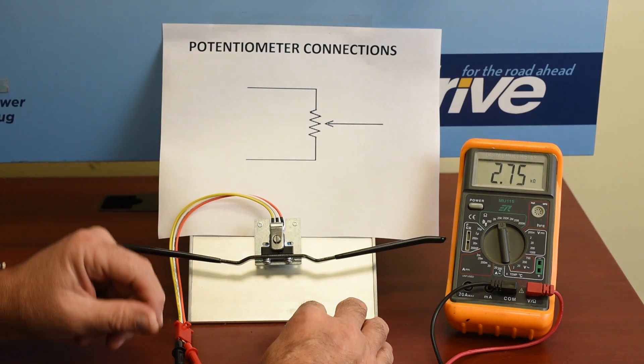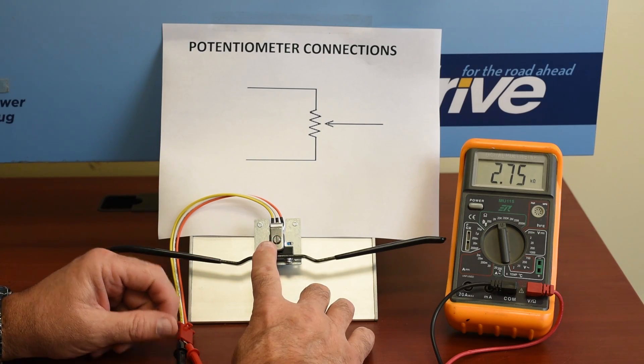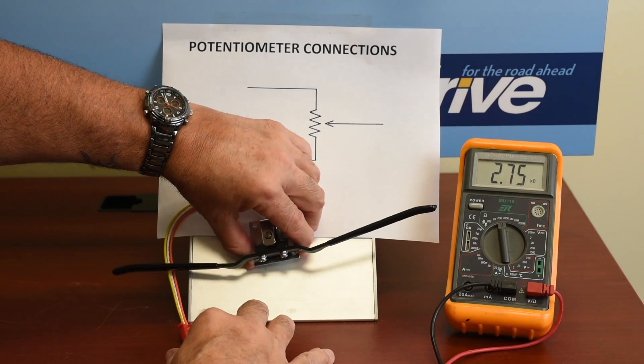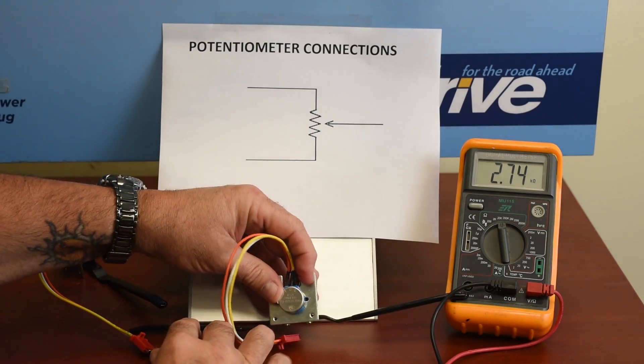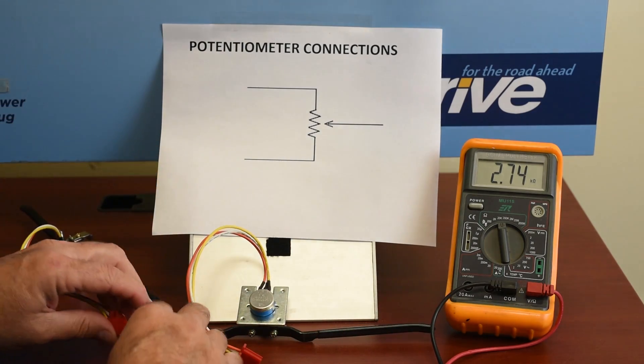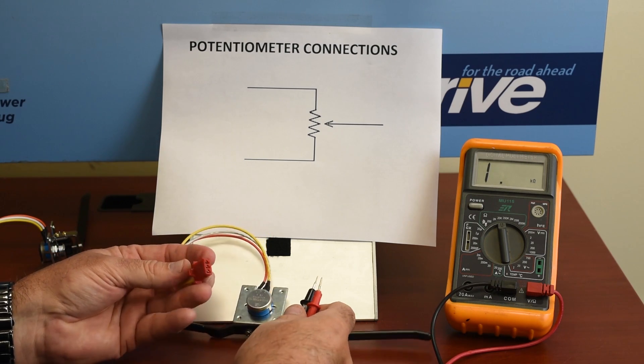What I want to show you now, because we've just seen what a good pot looks like. And over here, I have a pot that is bad. And I'll show you what you might find if you're trying to measure and find a bad one.